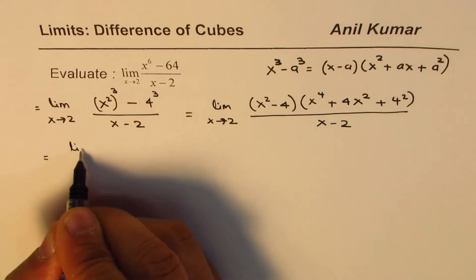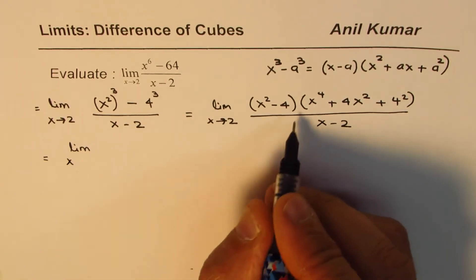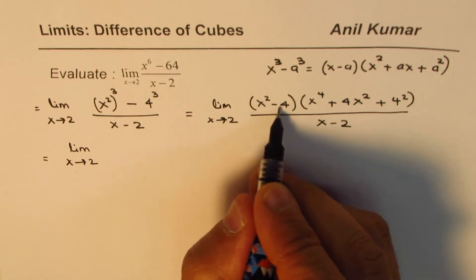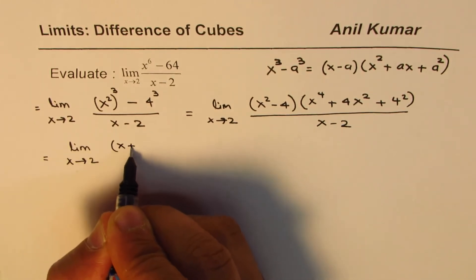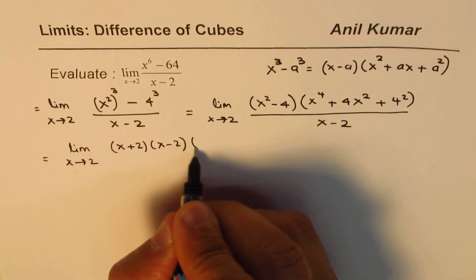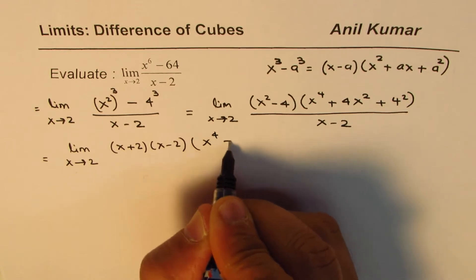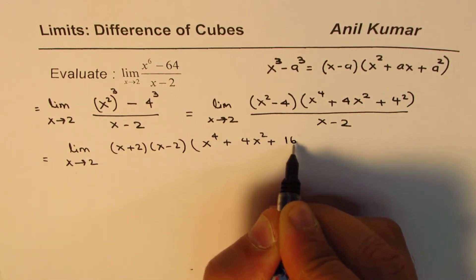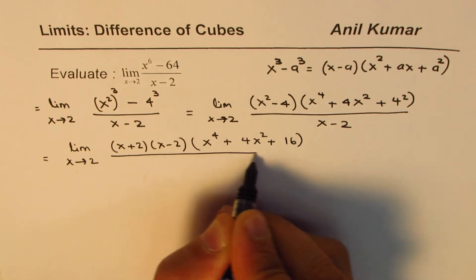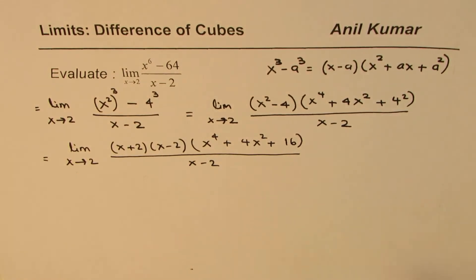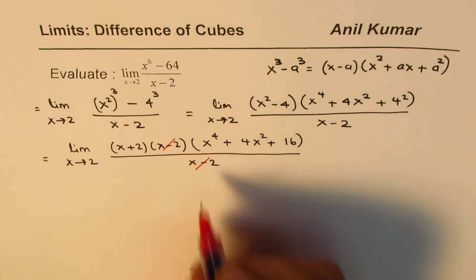Now we could again simplify this further by factoring x square minus 4. x square minus 4 can be written as x plus 2 times x minus 2. We have x to the power of 4 plus 4x square plus 4 square is 16, divided by x minus 2.